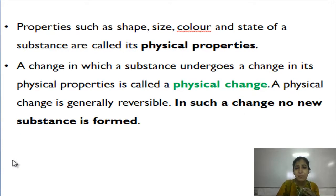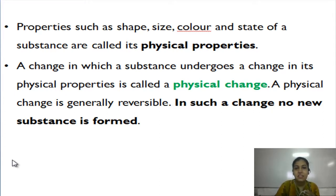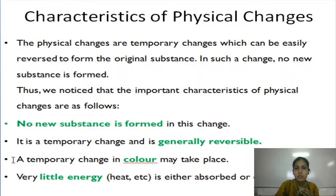Properties such as shape, size, color, and state of a substance are called its physical properties. A change in which a substance undergoes a change in its physical properties — that is, shape, size, color, and state — is called a physical change. A physical change is generally reversible, and in such a change, no new substance is formed. These are the main characteristics of physical changes.